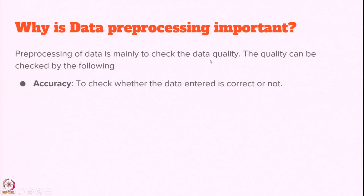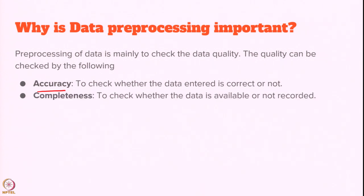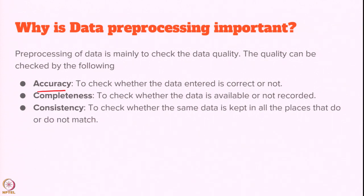Data pre-processing is required mainly to check the quality of the data. Among them, we need to know accuracy — the first point. Accuracy is used to check whether the data entered is correct or not. Completeness is the second point, which refers to whether we are recording all the data or not. Then consistency — are we keeping each attribute at the same position? That is about consistency.